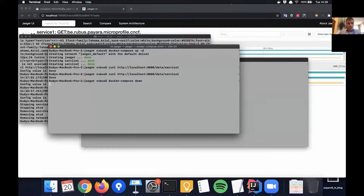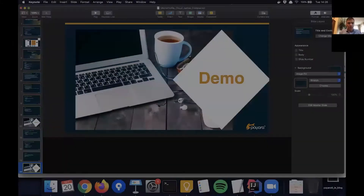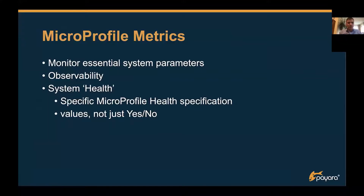Let's shut it down and continue to the last example, which is about metrics. In general, you can show any kind of metrics or values you want to follow. Those metrics can also be used for MicroProfile Health, because raw values don't say a lot — is a value of five good or bad? You always need some boundaries to validate those values against.